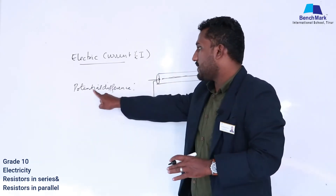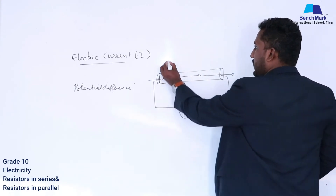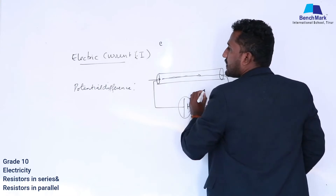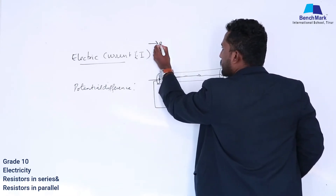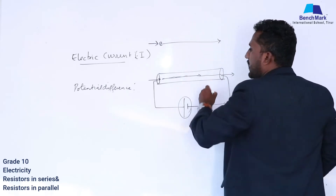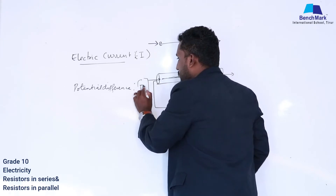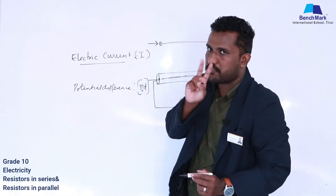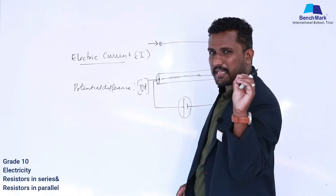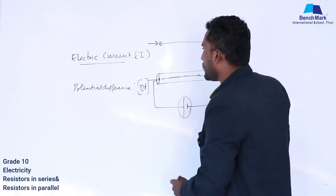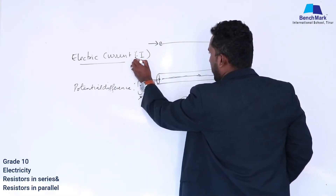Potential difference is nothing but work done. If I consider a charge, I want to give work to move it from one point to another — that is what we call potential difference, denoted as PD or V. Potential difference and voltage are almost the same, with a slight difference we will study in future. Without potential difference, there will be no current.